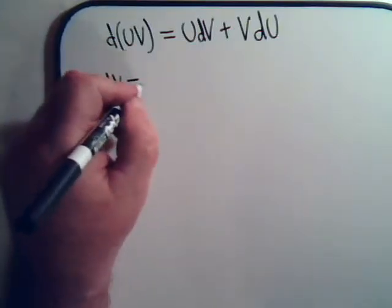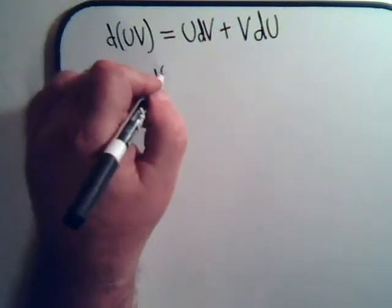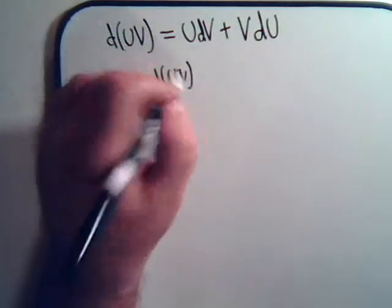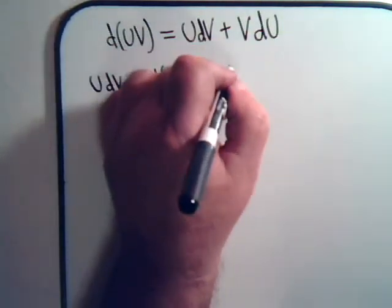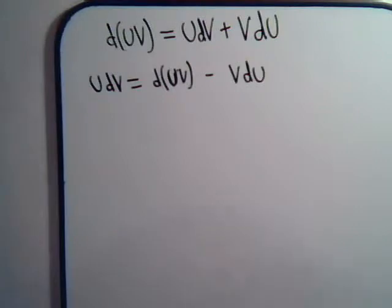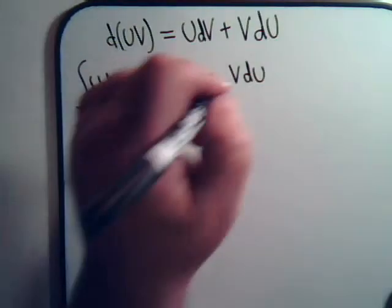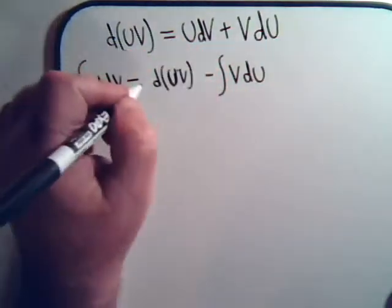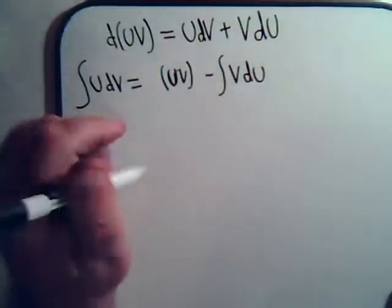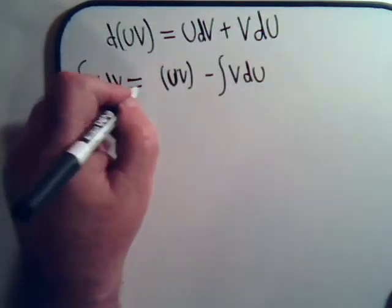UdV equals this minus the VdU. And if we integrate both sides of the equation, we'll have this. And if we integrate this, that just takes the differential part away. So we have this expression.